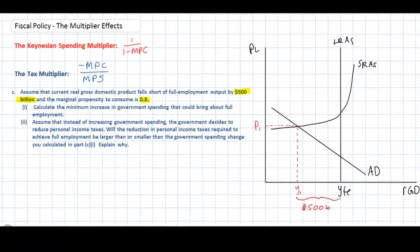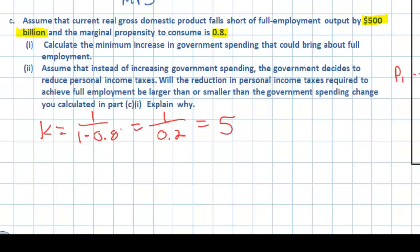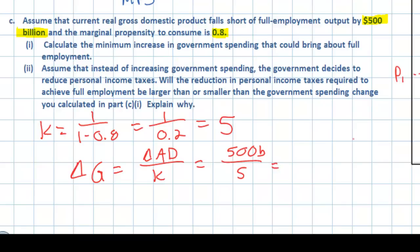Part C, question one asks: calculate the minimum increase in government spending that could bring about full employment. Our spending multiplier K equals 1 divided by (1 minus 0.8), which gives us 1 divided by 0.2, equaling a spending multiplier of 5. The required change in government spending equals the desired change in aggregate demand divided by the spending multiplier: 500 billion divided by 5 gives us an increase in government spending of 100 billion dollars.